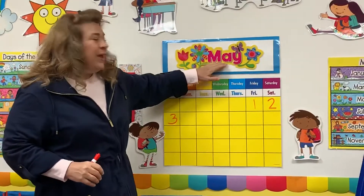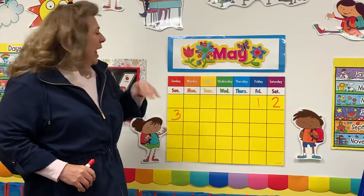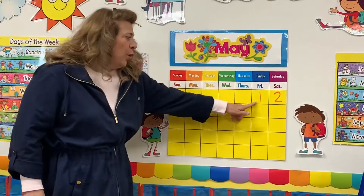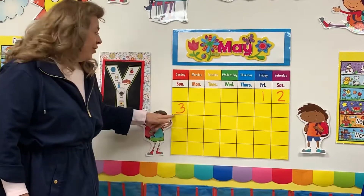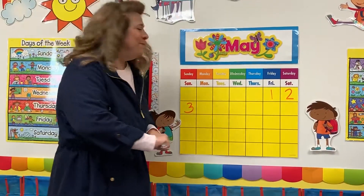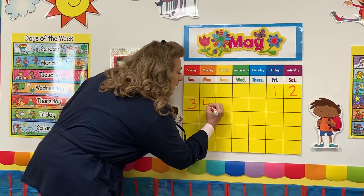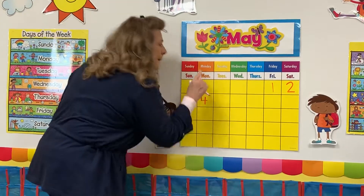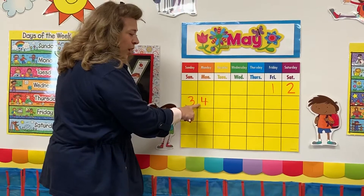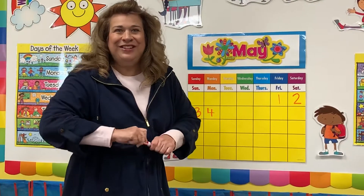The month we're in is May. And let's figure out what today's date is — one, two, three, four. Today is Monday, May 4th, 2020. Good job.